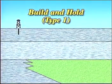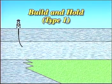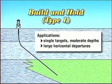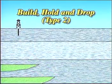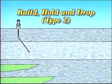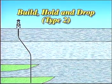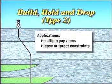The build and hold pattern employs a shallow initial deflection from vertical and a straight angle approach to the target. It's good mainly for reaching single targets at moderate depths and sometimes for drilling deeper wells with large horizontal departures. The build, hold, and drop pattern likewise employs a relatively shallow deflection and holds angle until it reaches most of the desired lateral displacement, but then the angle is reduced or brought back to vertical to reach the target. This pattern is primarily for wells in multiple pay zones or where there are lease or target constraints.